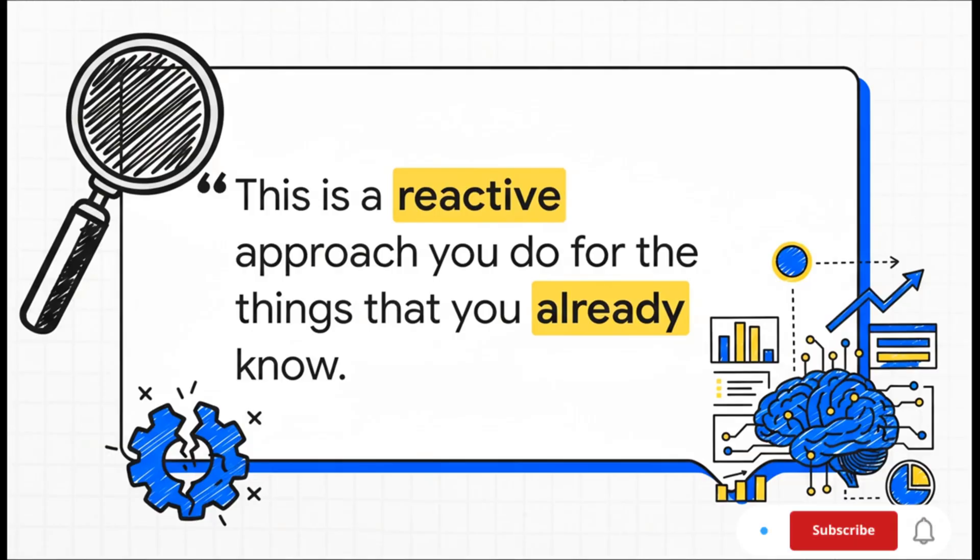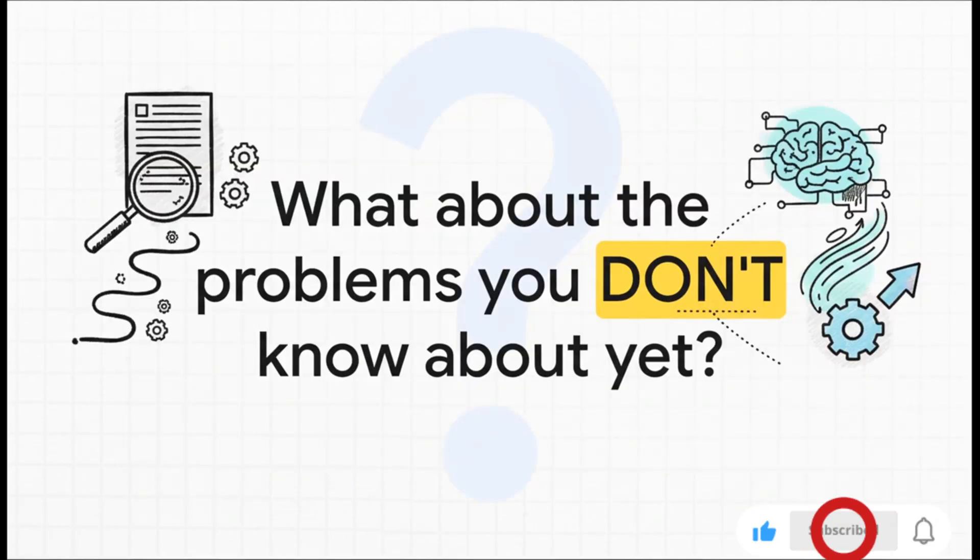It's straightforward and it's totally reactive. And here's the key thing to grasp: this whole method is limited by what you already know to look for. It's kind of like telling a security guard, 'Hey, only look for this one specific person wearing a red hat,' right? If a new threat comes along that you weren't expecting, that guard is going to miss it completely because they weren't told to look for it.